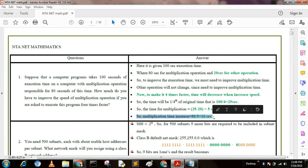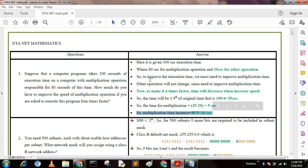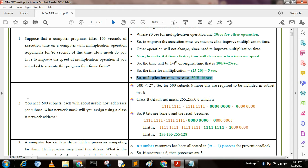Second question: You need 500 subnets, each with about usable host addresses per subnet. What network mask will you assign using a Class B network address? We know that for Class B there are two bytes net ID and two bytes host ID.